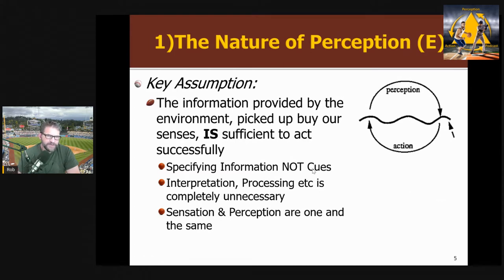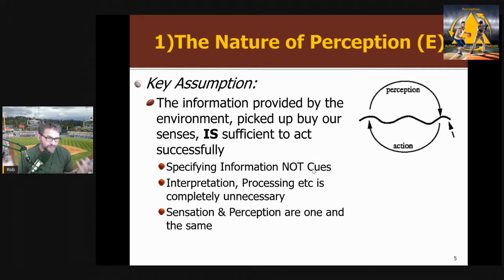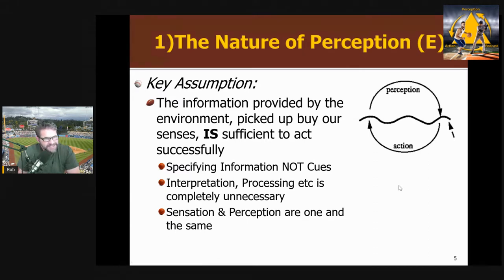The assumption in the ecological approach — which I'll call E — is the complete opposite. Information is not impoverished; it's actually completely sufficient on its own for guiding our actions. Instead of cues — things that might suggest what's out there — we have specifying information that directly tells us what's out there. Interpretation, processing, enhancing with memory, and predicting are all completely unnecessary because the information tells us everything we need to know. Sensation and perception are the same thing — there's no interpretation process. This is direct versus indirect perception, and that's where it all starts.